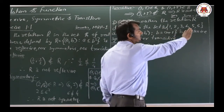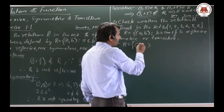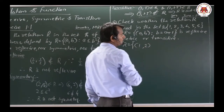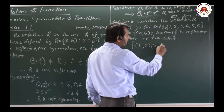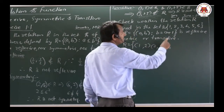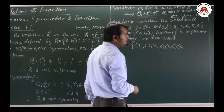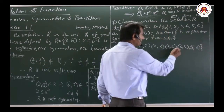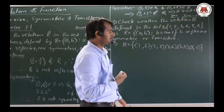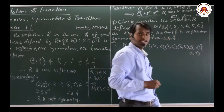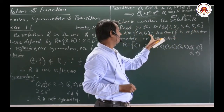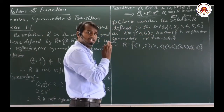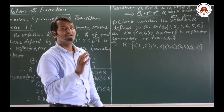Before starting, I will write R in roster form. If A = 1, B = 1+1 = 2; if A = 2, B = 3; if A = 3, B = 4; if A = 4, B = 5; if A = 5, B = 6. We cannot take A = 6 because B = 7 is not in the set. So the roster form of R contains pairs (1,2), (2,3), (3,4), (4,5), (5,6). Now it is easy to check reflexive, symmetric, or transitive.